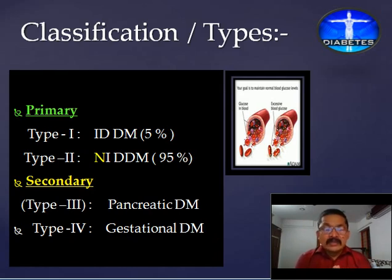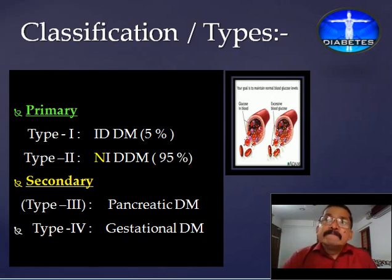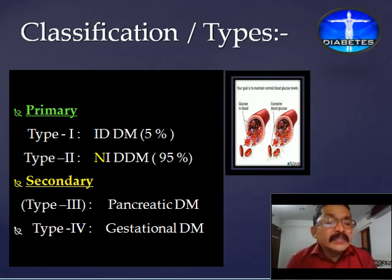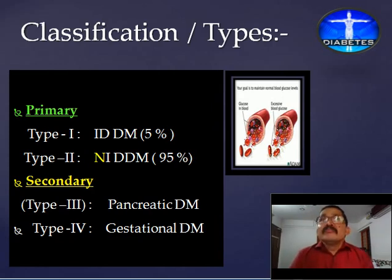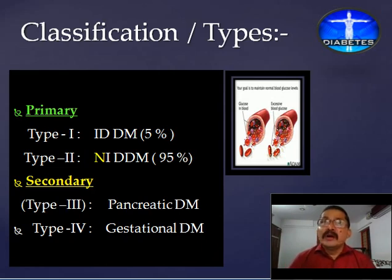Let us look at the etiology of IDDM. It is commonly seen in children, which is why informally it was known as juvenile diabetes. Basically, it is an autoimmune-mediated disorder, especially in patients with HLA-D type 3, and 90% of IDDM cases are constituted by autoimmunity. The next cause may be due to genetic predisposition, and secondary to some viral infections which may also predispose to autoimmunity, thereby resulting in IDDM in children.